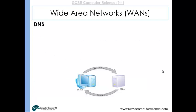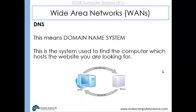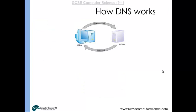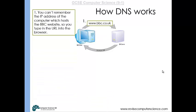DNS means Domain Name System, and it's the system used to find the computer which hosts the website that you're looking for. Computers can only connect to other computers if they know their IP addresses, but humans aren't very good at remembering bundles of numbers. We are, however, really good at remembering the names of companies, and as a result we're quite good at remembering URLs. So you can't remember the IP address of the computer which hosts, let's say, the BBC website.